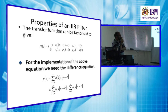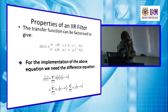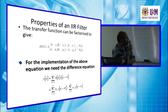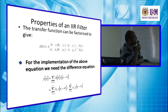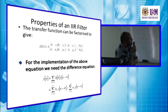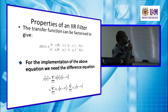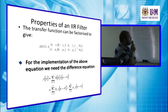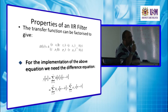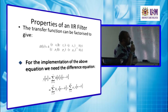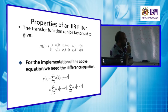The difference equation for the IIR filter is written in the form: y(n) equals the summation from k=0 to N of bk times x(n minus k), minus the summation from k=1 to M of ak times y(n minus k). This relation defines the output in terms of both past inputs and past outputs.